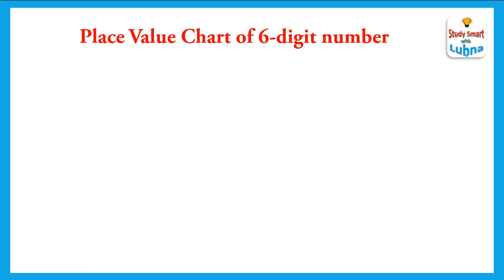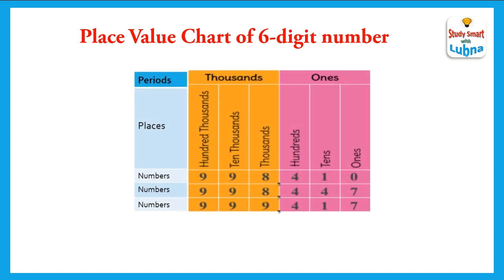Place value chart of six digit numbers. How can we write or represent numbers in the place value chart? We should know the basic components of a place value chart — periods, place values, and the numbers. In the six digit number in the international system we have only two periods: ones and thousands. The place values in the ones period are ones, tens, and hundreds. The place values in the thousands period are thousands, ten thousands, and hundred thousands. You will notice that after the ones period we put a comma in the international number system.